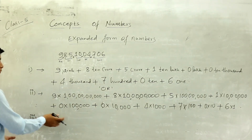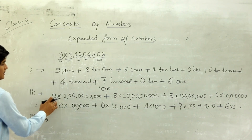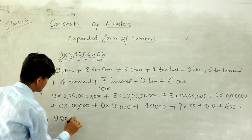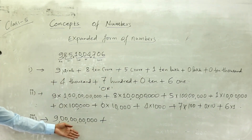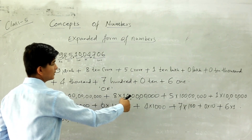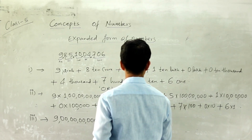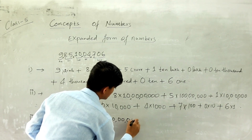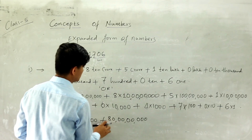Now the third form. In this form, we multiply each digit by its place value and write the actual value. So nine into one crore — which is 9 crores. Eight into ten crores — eight is in 10 crores place, so write 80 crores. Then 5 crores. After that, one into ten lakhs — which is 10 lakhs.